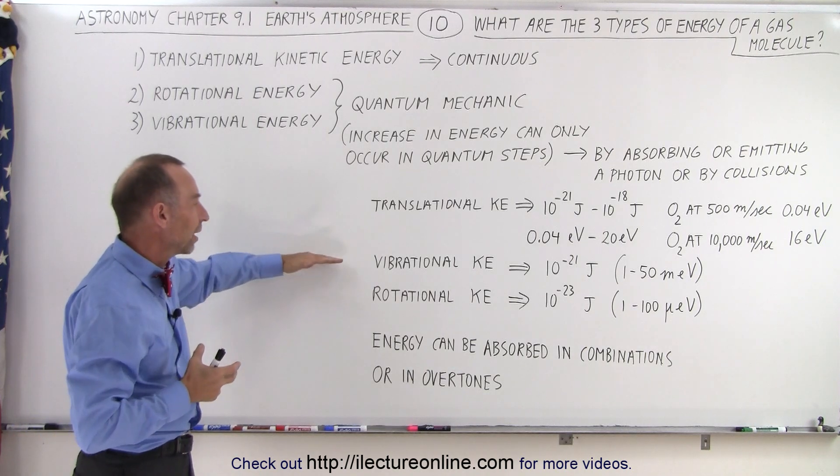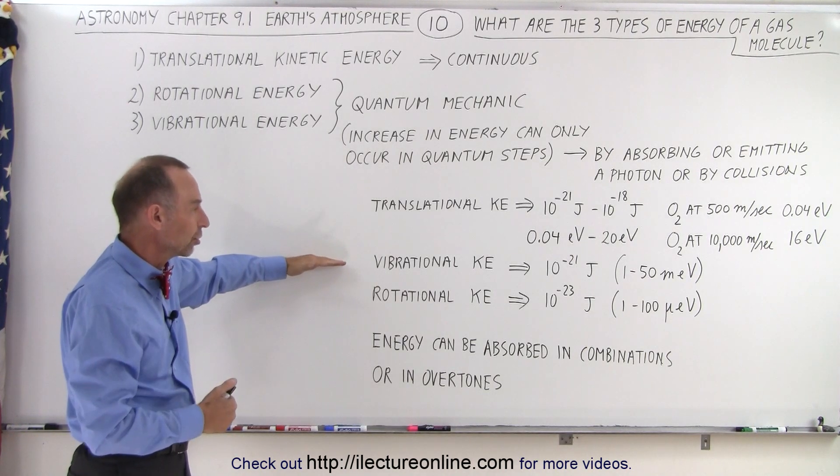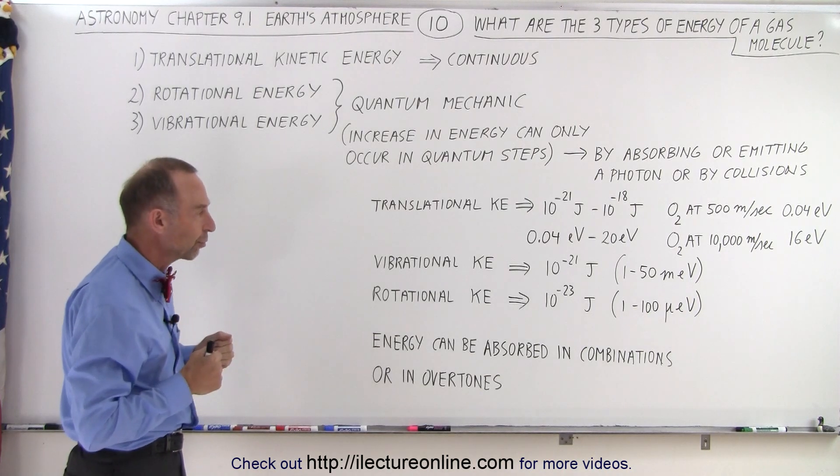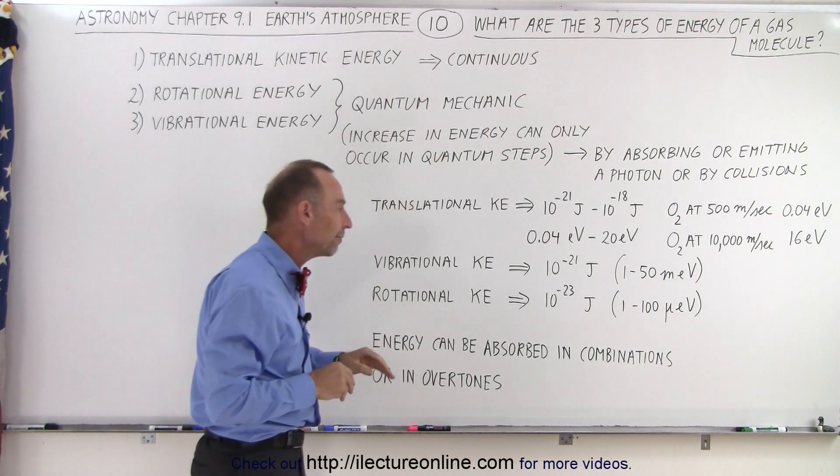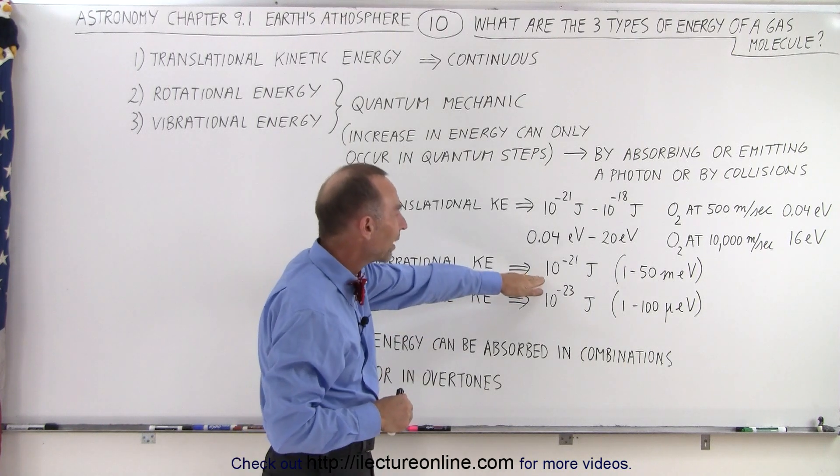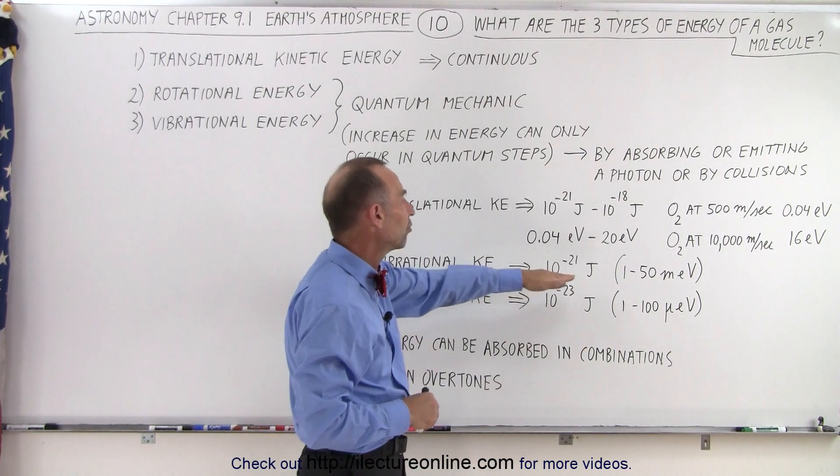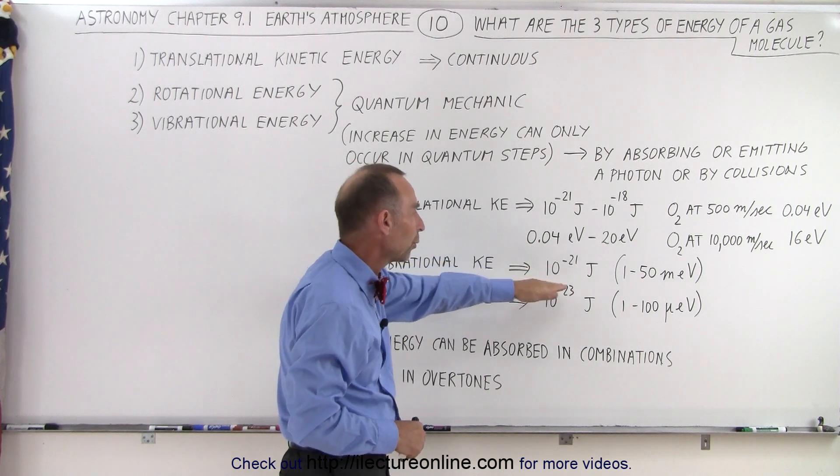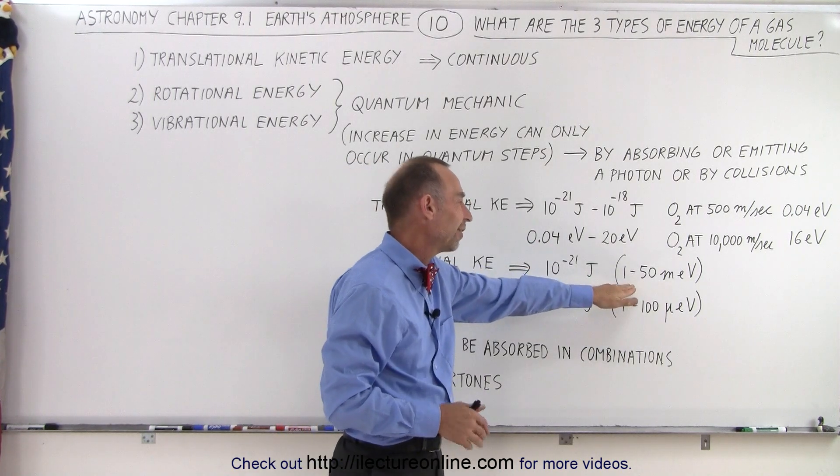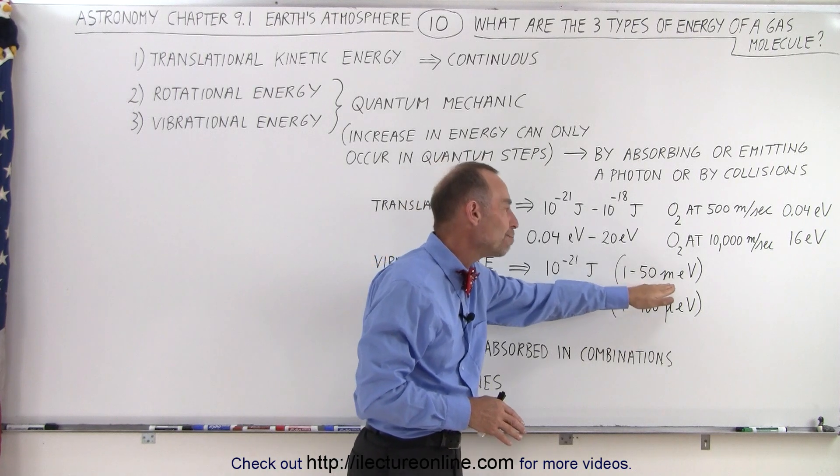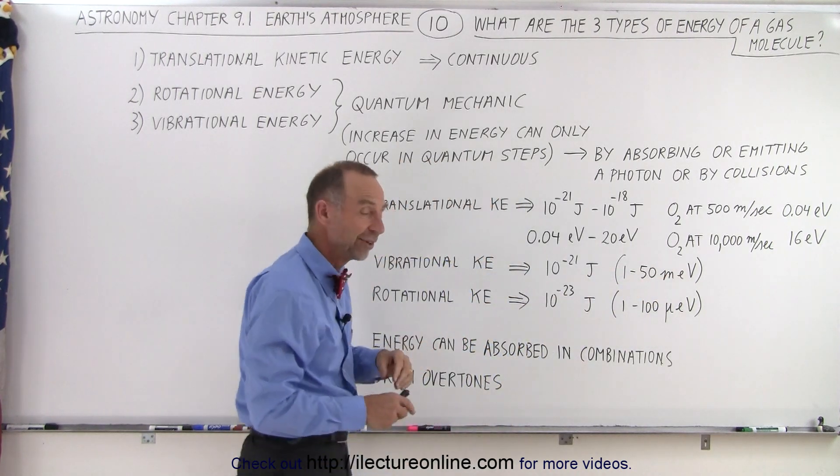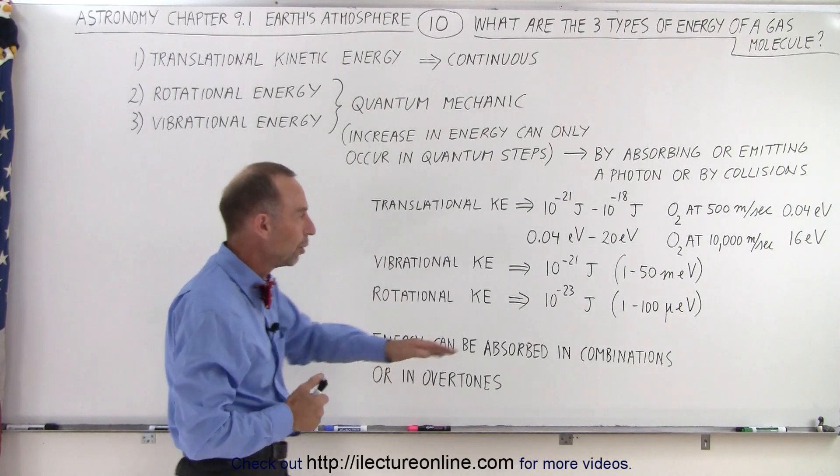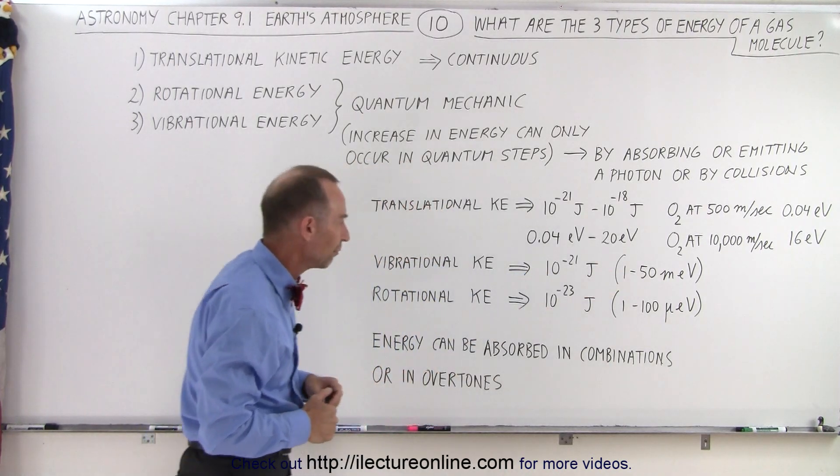The next mode that has a lot of energy is called the vibrational kinetic energy mode, when the molecule begins to vibrate in one of its various ways. And there, the amount of energy that it can contain is around 10^-21 joules. At its upper end it's about the same as the slower kinetic energy. At its lower end it's quite a bit less. So it varies anywhere from about 1 to 50 millielectron volts - that's not mega electron volts, that's millielectron volts - so 1 one-thousandth of an electron volt to 50 one-thousandths of an electron volt.